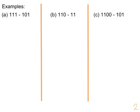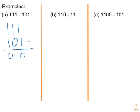Just going to quickly go through three examples. We have 1 1 1 take away 1 0 1. The one take away one is zero, one take away zero is still one, and the one take away one is zero. So our final answer is going to be 0 1 0.